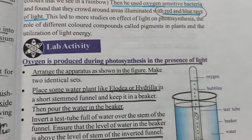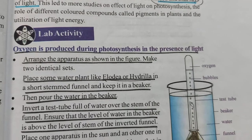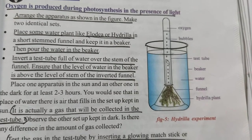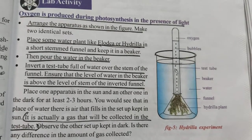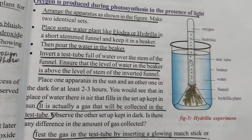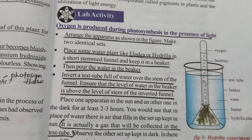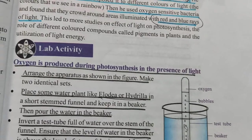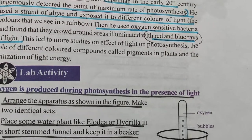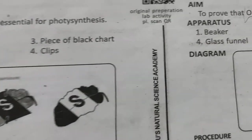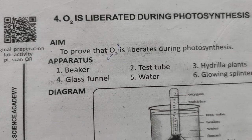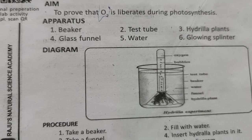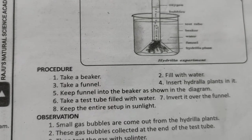To prove another experiment: that oxygen is produced during photosynthesis in the presence of light. Aim: To prove that oxygen is liberated during photosynthesis — the hydrilla plant experiment. Apparatus required: beaker, test tube, hydrilla plant, glass funnel, water, and a glowing splinter.